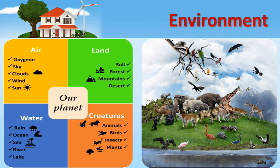These are the four main constituents of our environment. In this chart you can see some forms and examples of each of the four constituents. For example, the air constitutes items like oxygen, the sky, clouds, the wind, the sun, etc. The second constituent, which is the land, has items like the soil, forests, mountains, and desert. Water contains items like rain, oceans, seas, rivers, lakes, and waterfalls.